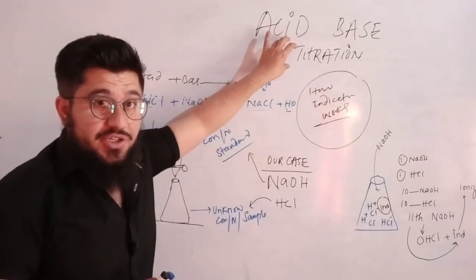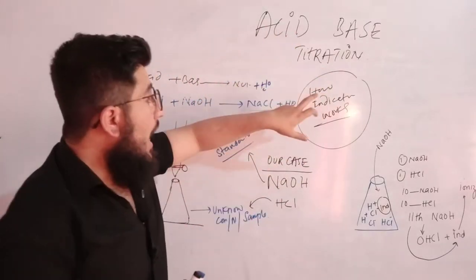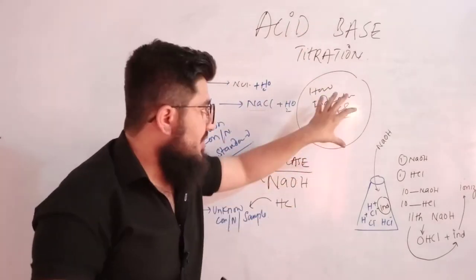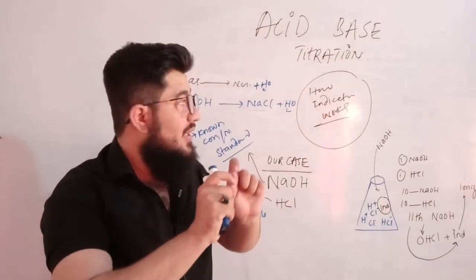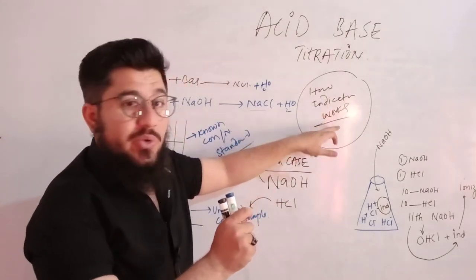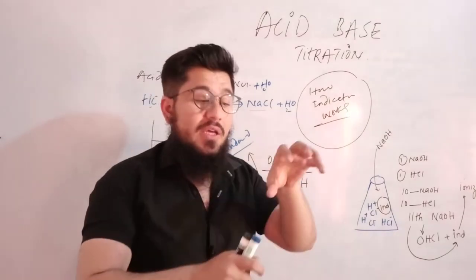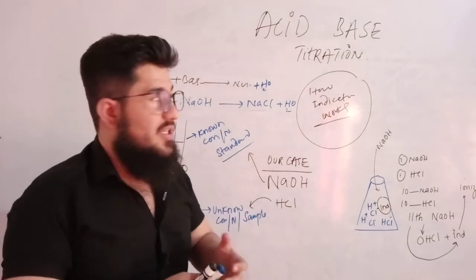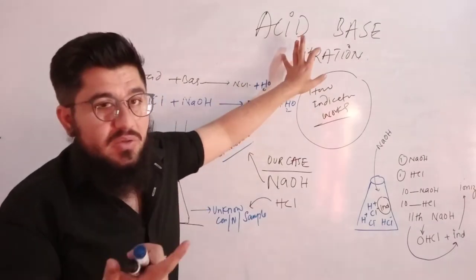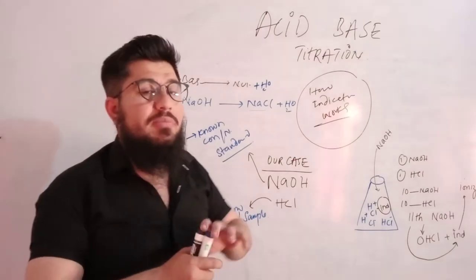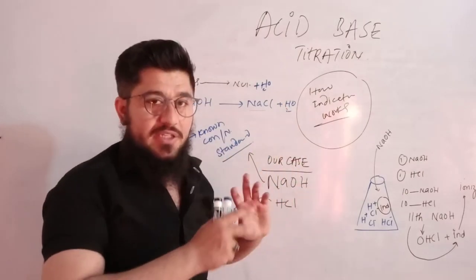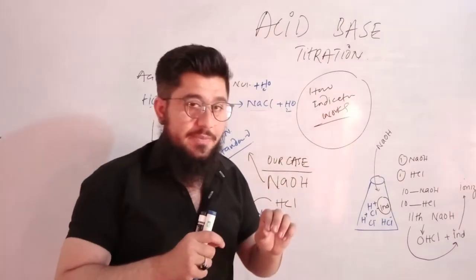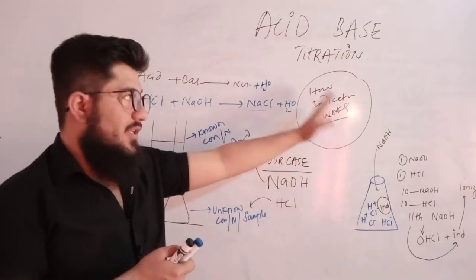The topic is acid-base titration, and the question is how an indicator works in acid-base titration. We will get a complete understanding of how the indicator is actually working. There is also the question of what titration is and what acid-base titration is called. Our concentration will be mainly on how the indicator works. Let's get started from the very basics.